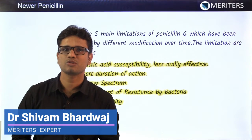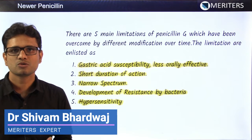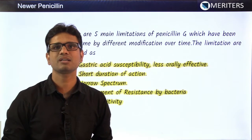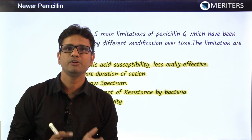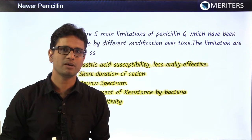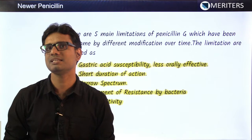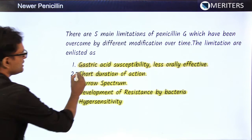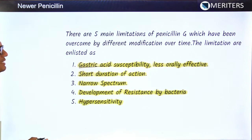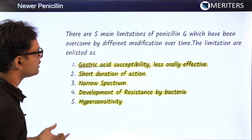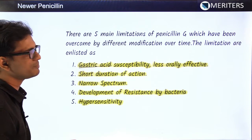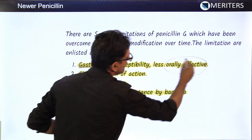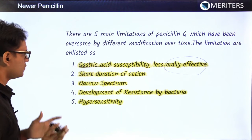There are many limitations and drawbacks of Penicillin G. To counteract and overcome all those limitations, newer forms of penicillin have been developed. The five problems we have with Penicillin G are: first, gastric acid susceptibility — it will be broken down at gastric pH of 1.8, making it less effective if given by the oral route.